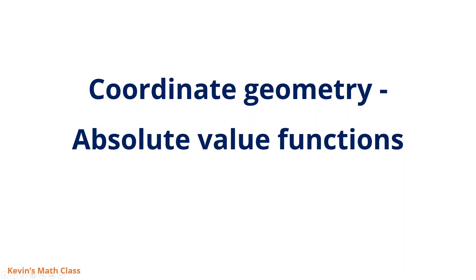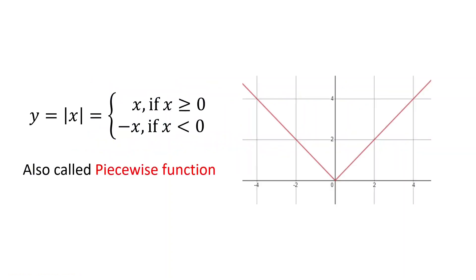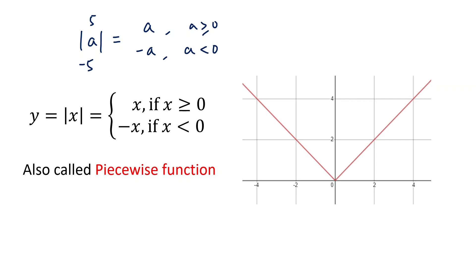Hello everyone. In this lecture, we continue to talk about coordinate geometry, absolute value functions. We already know the idea of absolute value. For example, the absolute value of a number will equal itself when positive, and when the number is negative, say negative 5, we get the negative of that number — negative a — when a is smaller than zero. This is the basic idea of absolute value.